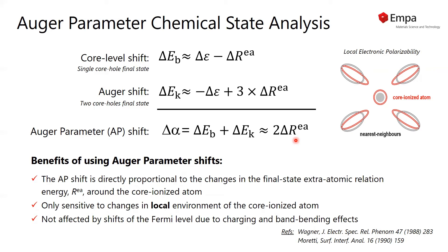Moreover, the Auger parameter considers an energy difference between an Auger and a photoelectron line and is therefore not affected by shifts of the Fermi level due to charging and band bending effects, which is also a huge advantage.